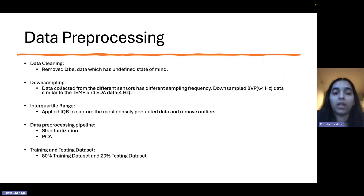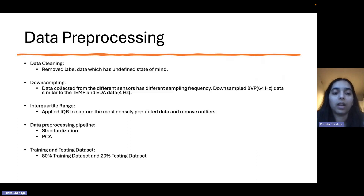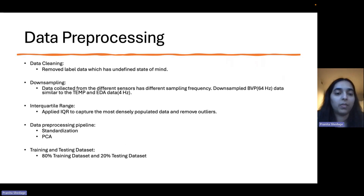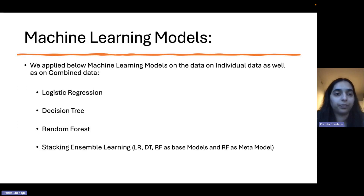We also applied the interquartile range. Further, we created a data pre-processing pipeline which included standardization and principal component analysis. We divided our dataset into training and testing datasets. The training dataset was 80% and the testing dataset was 20%. We applied the data pre-processing pipeline to both the training and testing datasets.